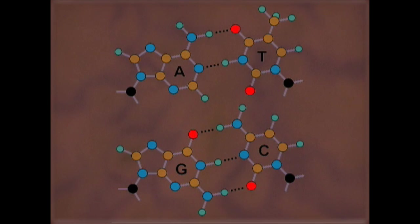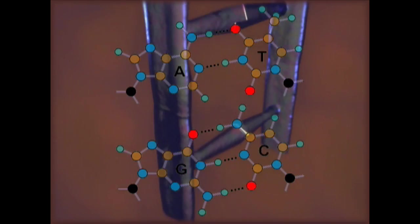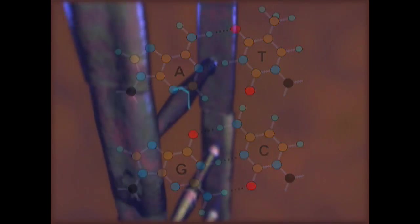Adenine, guanine, cytosine, and thymine. The two chains are held together by bonds formed between complementary bases. Adenine will always pair with thymine, and cytosine with guanine.